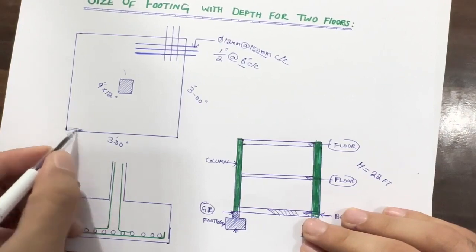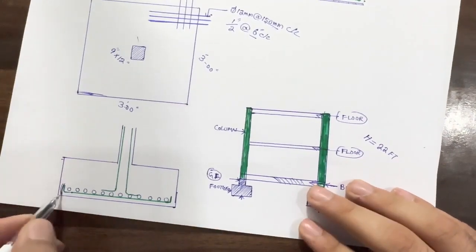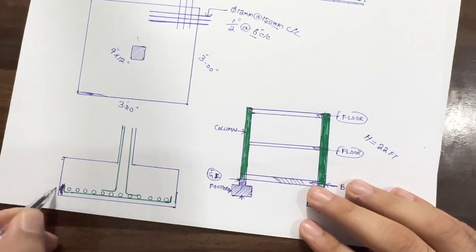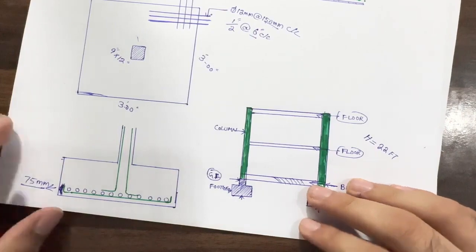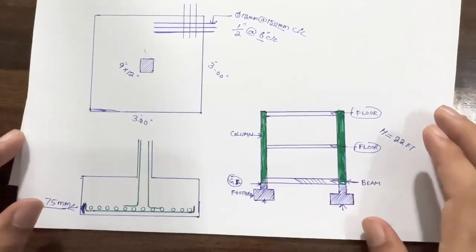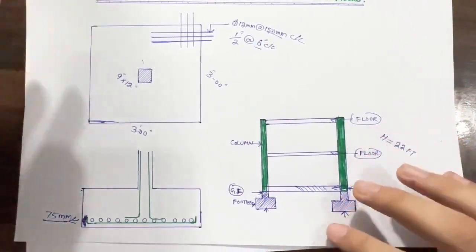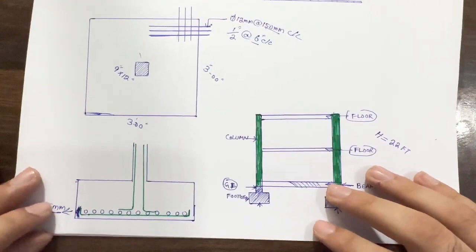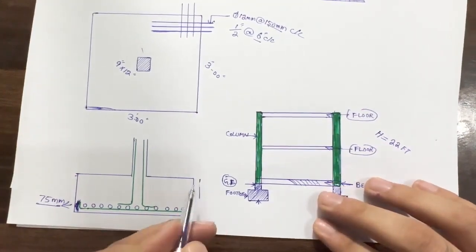Remember, for each side the concrete cover should not be less than 75 millimeters or three inches. This cover applies to the left side, bottom, top, and all sides of the footing, as you can see in this section.